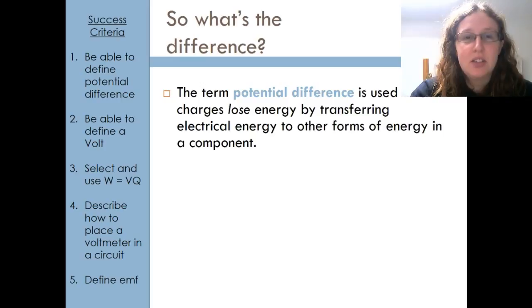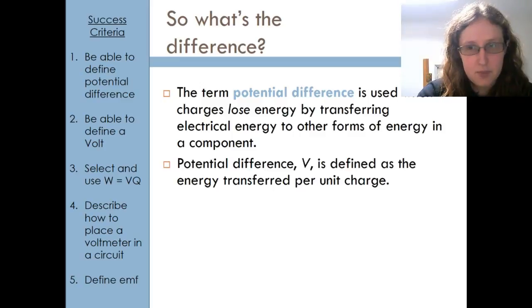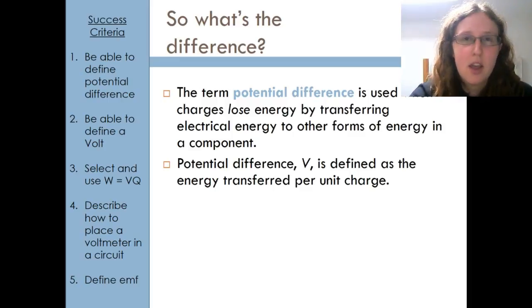Potential difference is used when charges are losing energy by transferring electrical energy to something else. Potential difference is defined as the energy transferred per unit charge there. So I've got that definition: energy transferred per unit charge from electrical.